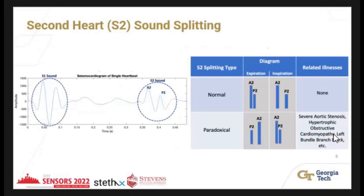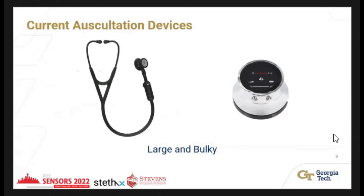The second heart sound actually consists of two major peaks: A2 and P2. For a normal physiological person, A2 occurs first and P2 occurs afterwards. However, in paradoxical splitting — seen in patients with severe aortic stenosis — the P2 sound actually occurs first. This is because the P2 valve is typically smaller. This is a key, and underappreciated, indicator for severe aortic stenosis.